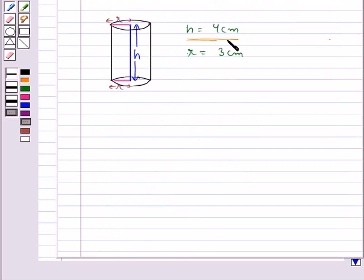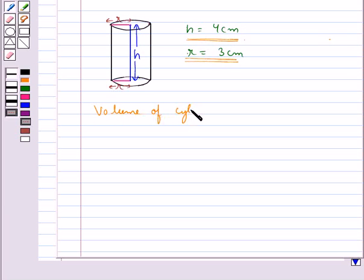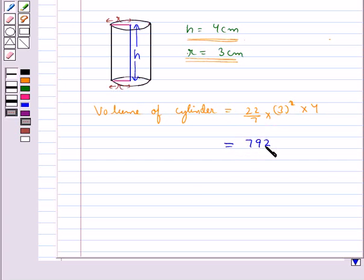Consider this cylinder with height H equal to 4 cm and base radius R equal to 3 cm. The volume of this cylinder is given by π R² H, which comes out to be equal to 792/7, that is equal to 113.14 cm³.